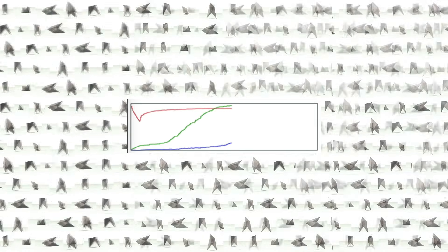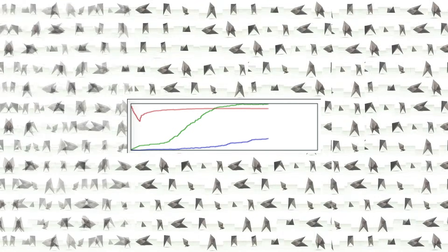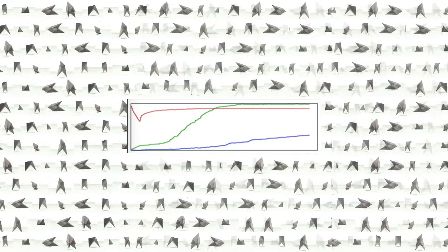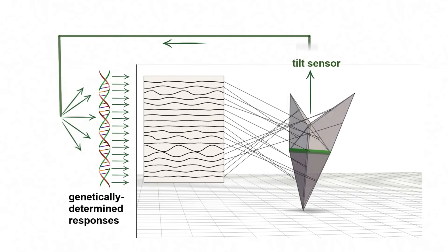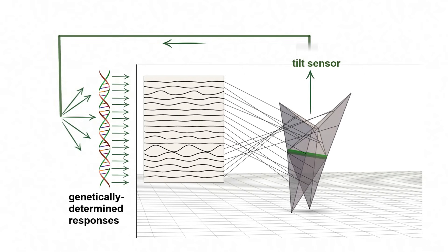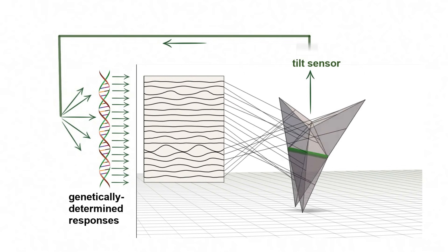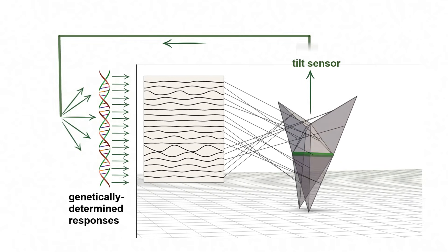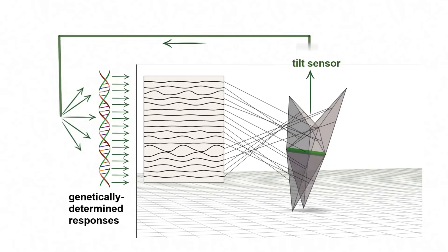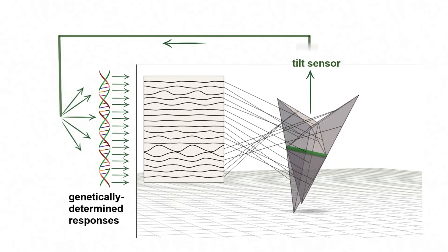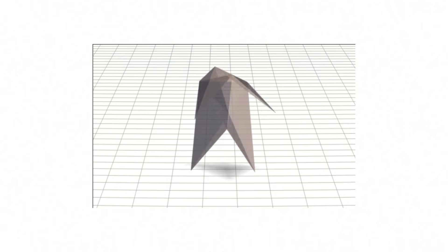The purpose of the genetic algorithm is to find needles in the haystack, motions that actually allow the creature to walk. The tilt sensor continually adjusts the phases and amplitudes for each spring. The genetics of a creature determine exactly how the signals from the tilt sensor are used to adjust the springs in order to keep the creature from falling over.